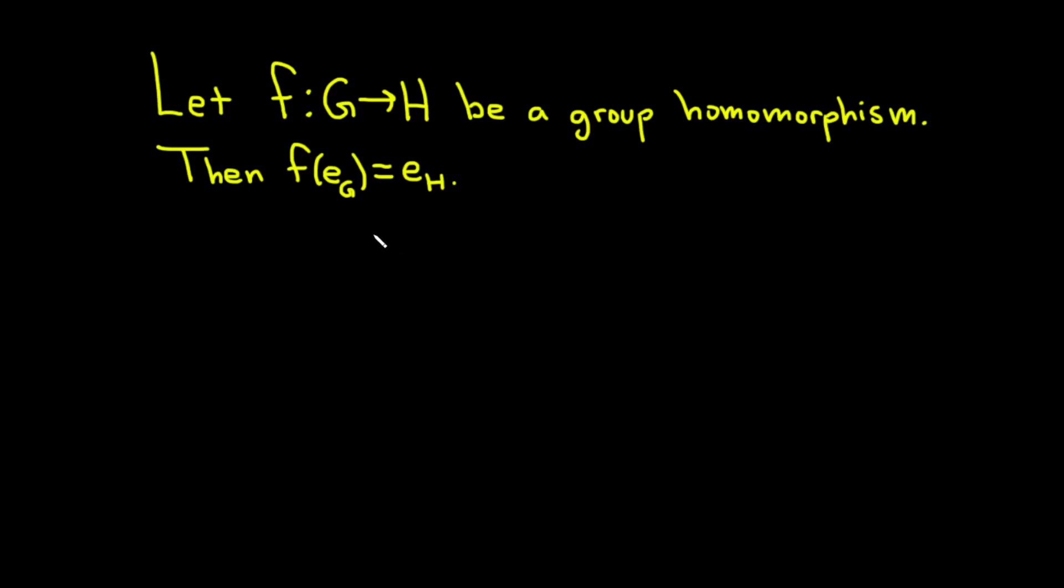Hello, in this video we're going to do a proof. We have a function f from G into H and we're told it is a group homomorphism, and we're going to prove this equation: f(e_G) = e_H.